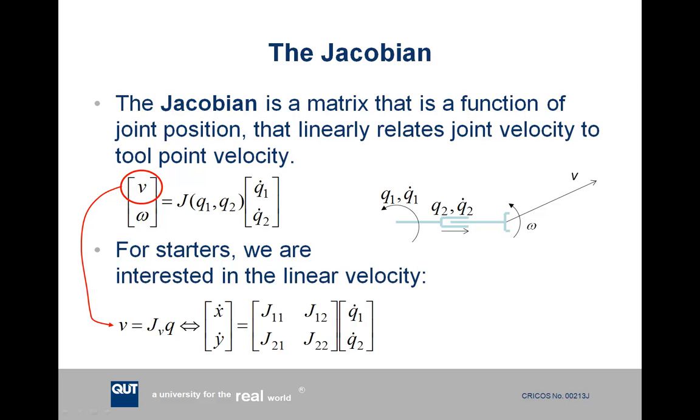So there's this useful matrix called the Jacobian, which is a matrix that's a function of joint position, so the values inside the matrix are calculated based on your current joint positions. And what this Jacobian does is it linearly relates the joint velocity to your tool point velocity. So in this mathematical expression here, we have q1 dot and q2 dot, and those are the joint velocities for joint 1 and joint 2 in this two-link robot arm. Then in front of it, you've got your Jacobian matrix J, and in brackets q1 comma q2, and this indicates that the format and numbers inside the Jacobian are a function of q1 and q2, your joint variables. And that gives you your linear velocity and rotational velocity of your tool point.